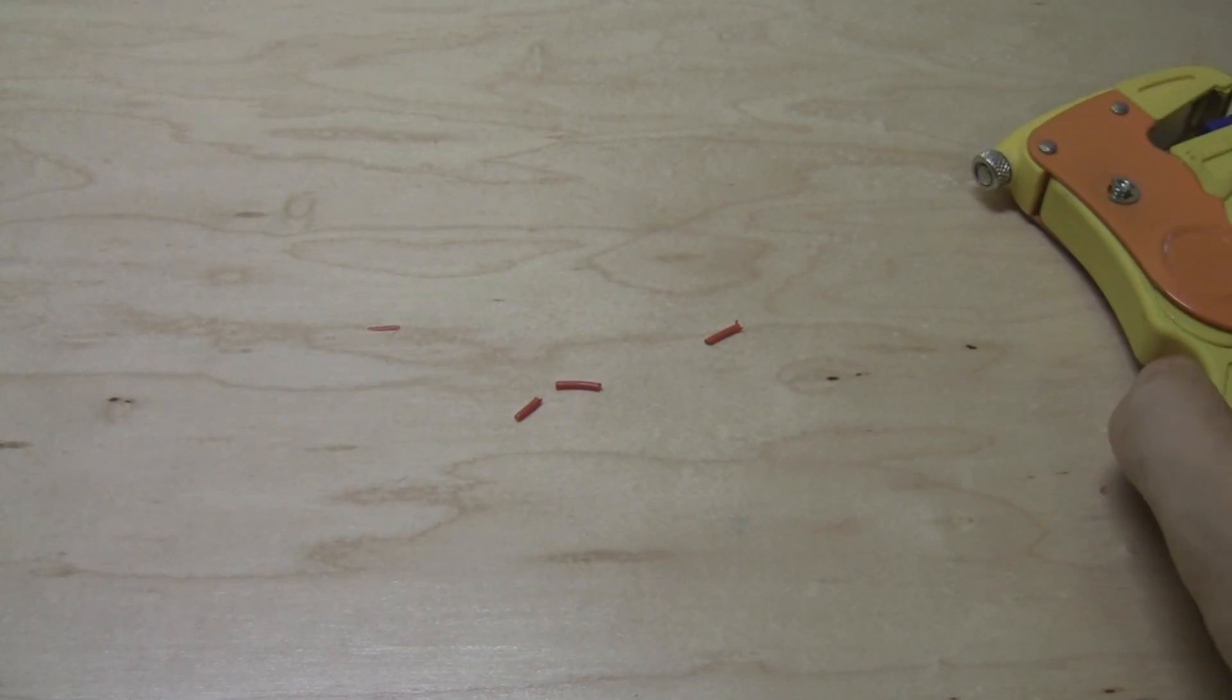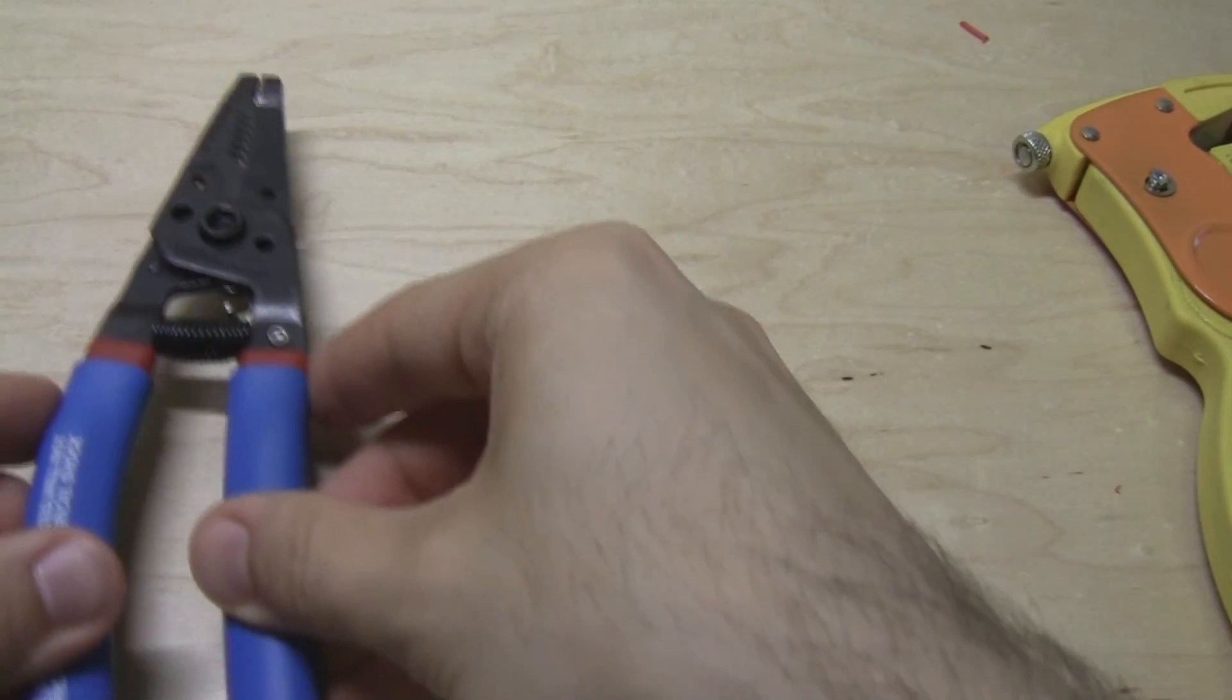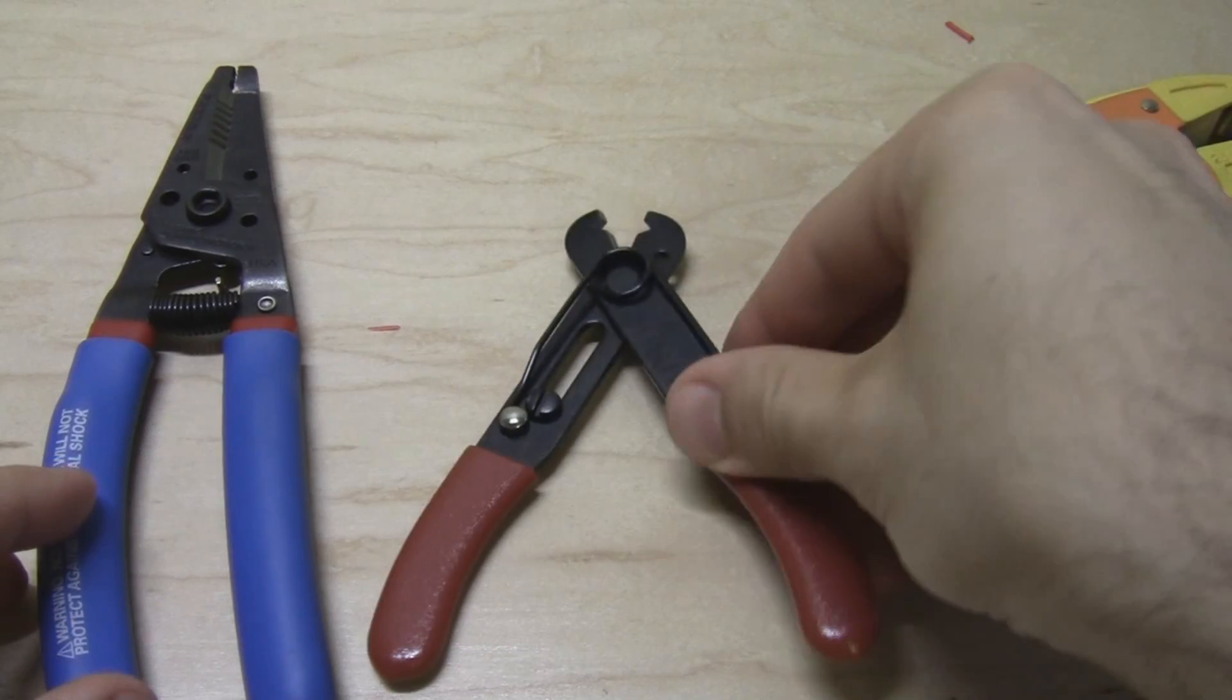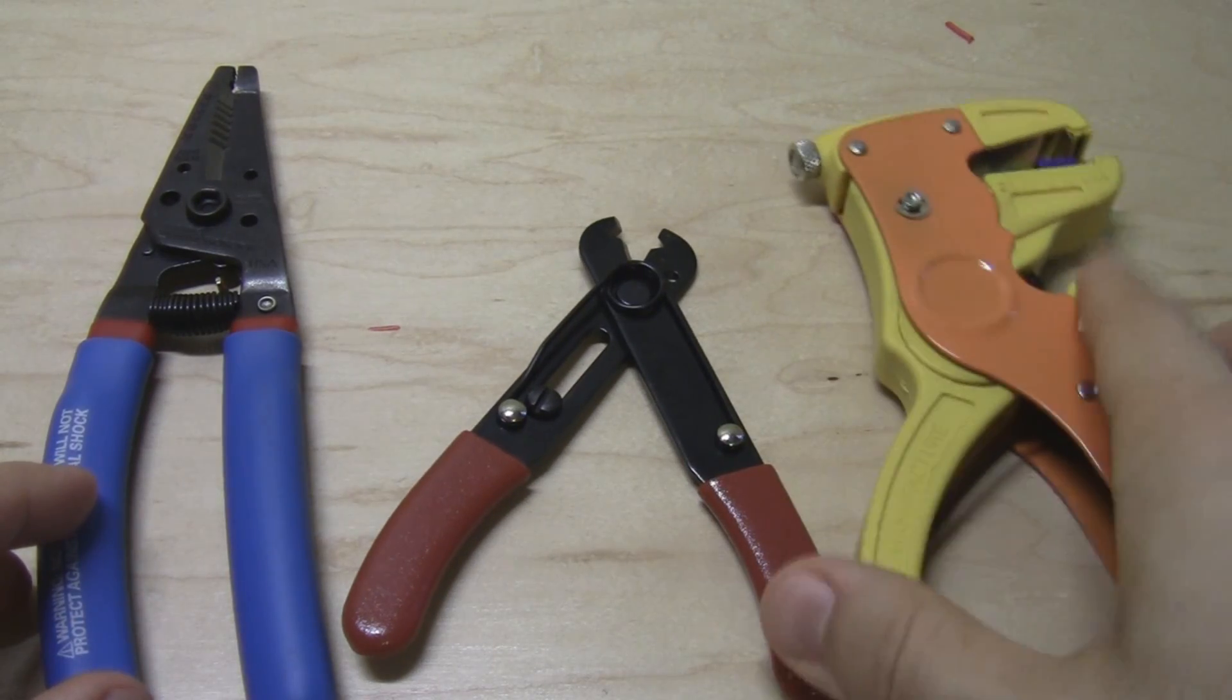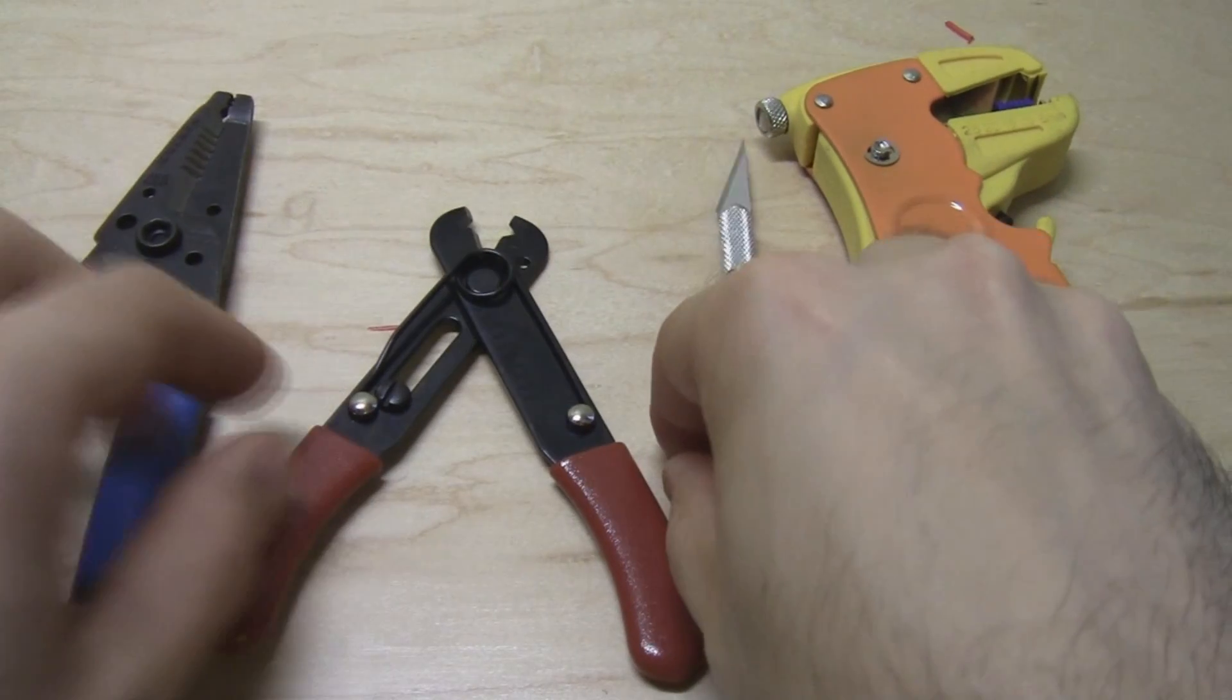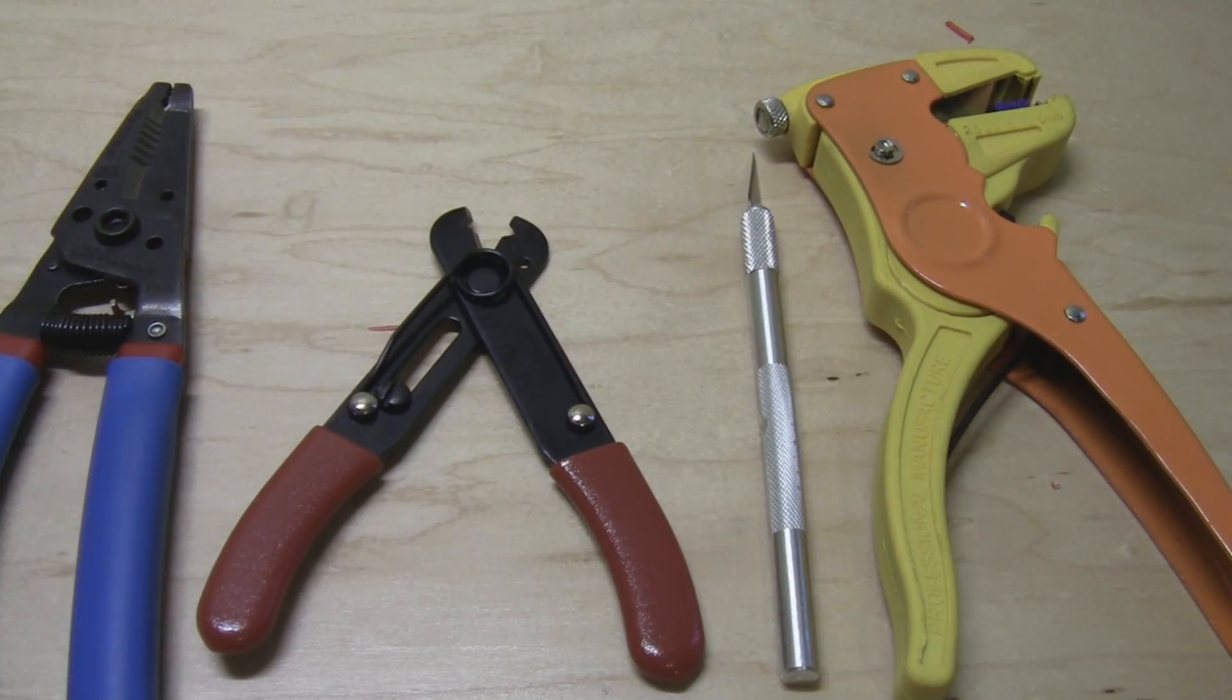So those are the different approaches. I'll bring all the tools back in here one more time so you can see them. We have gauged wire strippers on the left, adjustable wire strippers, automatic or parrot wire strippers and then finally just our little hobby knife here. So recommend this one but the other options will work in a pinch.